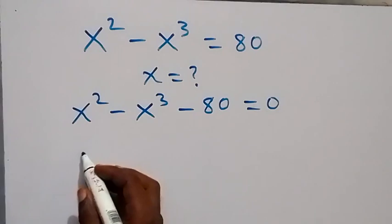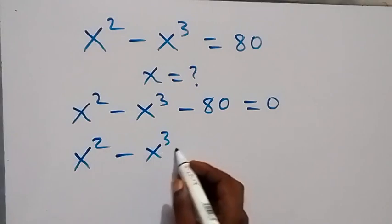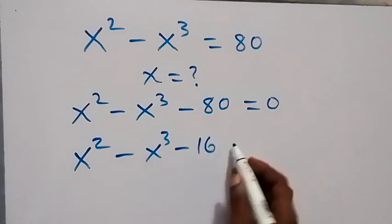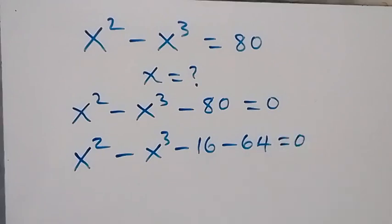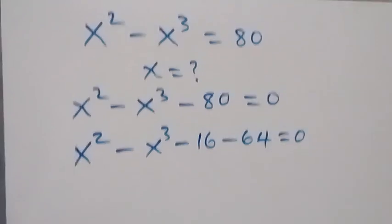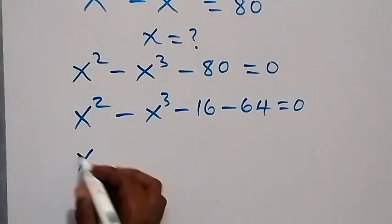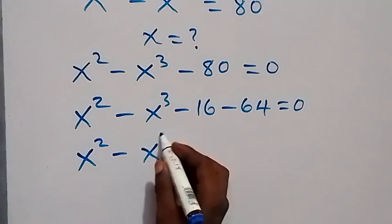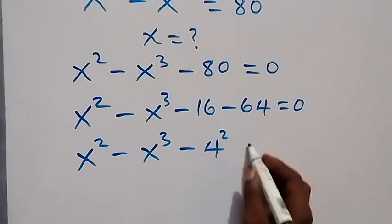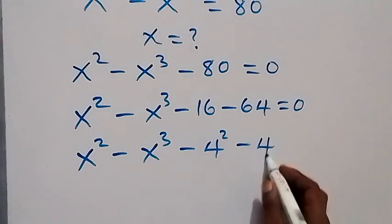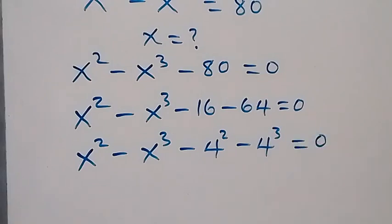We can separate minus 80 as minus 16 minus 64. Then we have x squared minus x cubed minus 16 minus 64 equals 0. We can also write this as x squared minus x cubed minus 4 squared, that's 16, then minus 4 cubed, that's 64, equals 0.